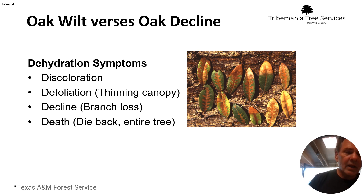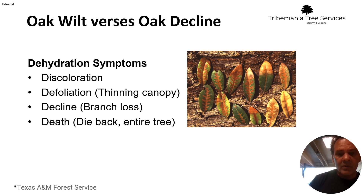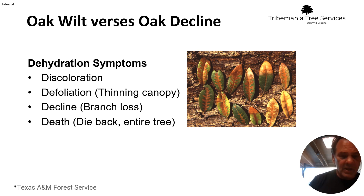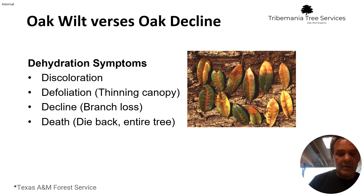Decline will show dead branches and then just overall decline in the tree. Then the last and final step in the process is death. And typically, that starts with what is called dieback — you'll see branches up in the top that die back completely, and then eventually the entire tree will die.